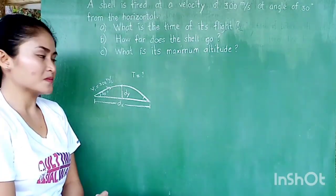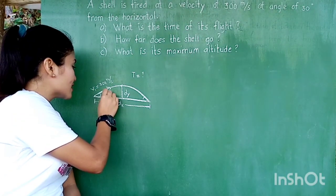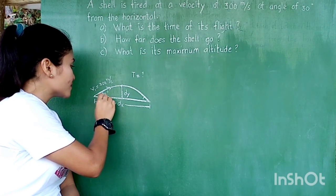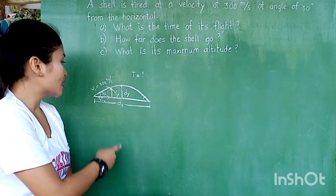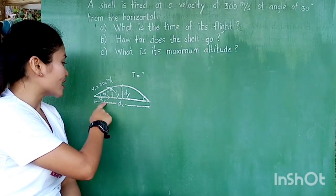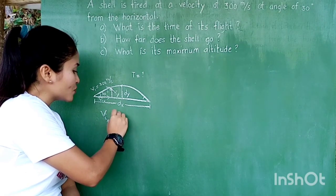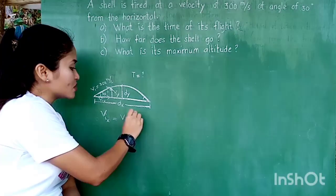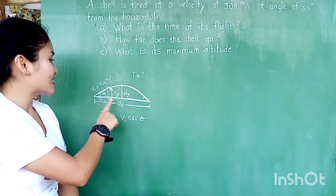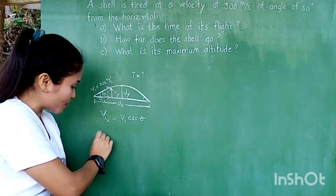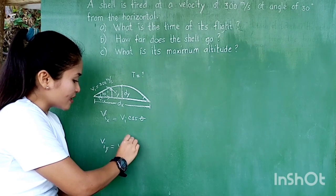Now let's look into the initial velocity, which is still not resolved into its components. This is our VIX here as one component of VI, and this is our VIY. Note that our VIX side is adjacent to the angle of 30 degrees. Therefore, to solve for VIX, we use the formula VI times cosine theta. And for our VIY, since this is opposite to the angle of 30 degrees, we use the formula VIY equals VI sine theta.